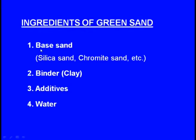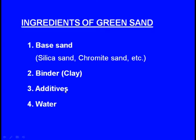The ingredients of green sand are: first, the base sand — which could be silica sand, chromite sand, zircon sand, etc. Second, a binder, also known as clay. Third, additives like starch, sea coal, and so on. Fourth and finally, moisture. These four are the ingredients of green sand.